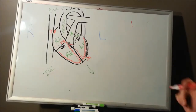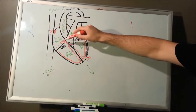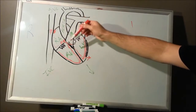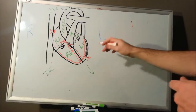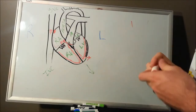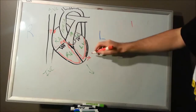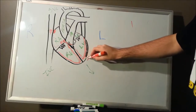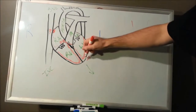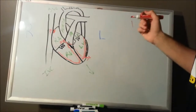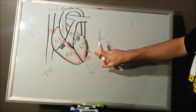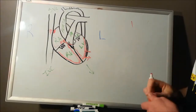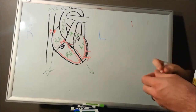Running through one last time: sinoatrial node, atrioventricular node, bundle of His, bundle branches, Purkinje system. First it's going to depolarize your endocardium, then work its way to the epicardium. And then, once depolarization has occurred, repolarization will occur. Repolarization works just the opposite way — it's going to start in the epicardium and repolarize down to the endocardium.